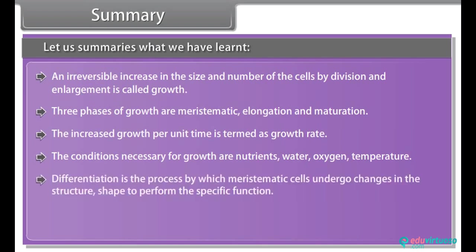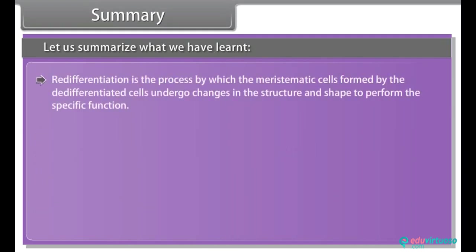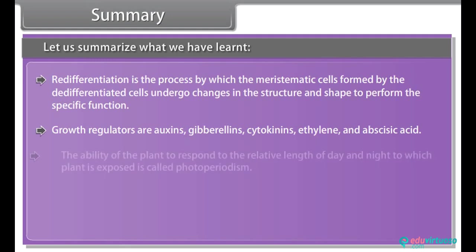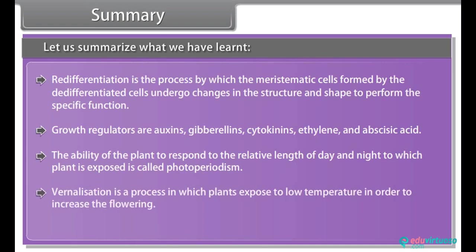Differentiation is the process by which meristematic cells undergo changes in the structure shaped to perform the specific function. Growth regulators are auxins, gibberellins, cytokinins, ethylene and abscisic acid. The ability of the plant to respond to the relative length of day and night to which the plant is exposed is called photoperiodism. Vernalization is a process in which plants are exposed to low temperature in order to increase flowering.